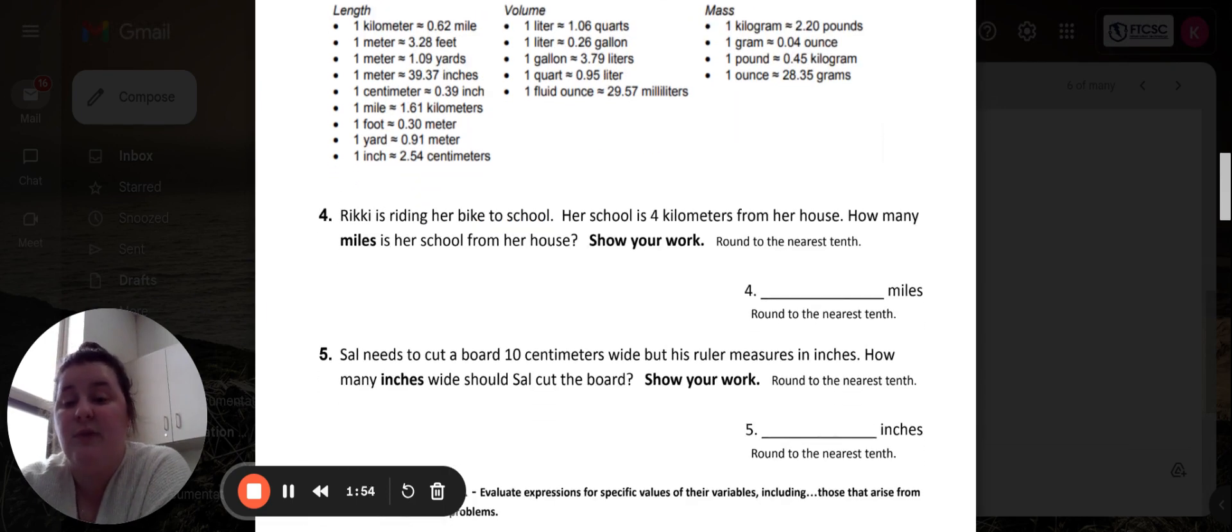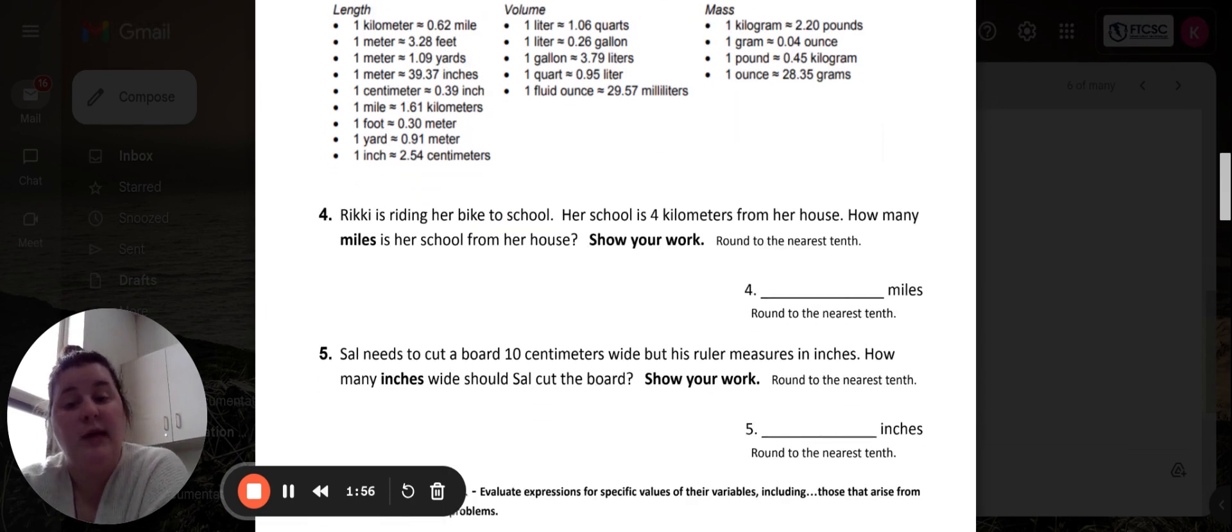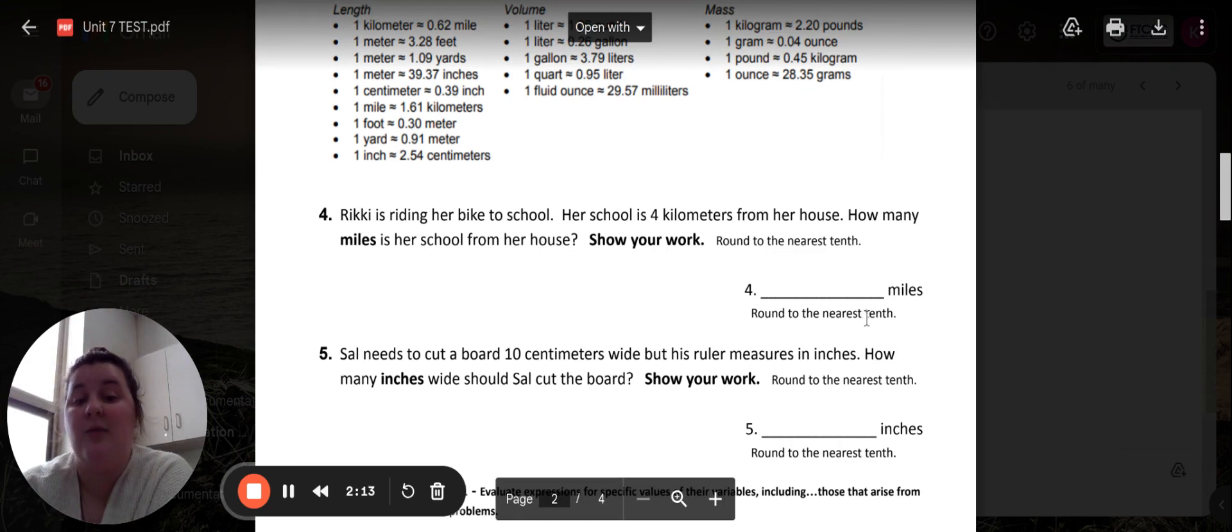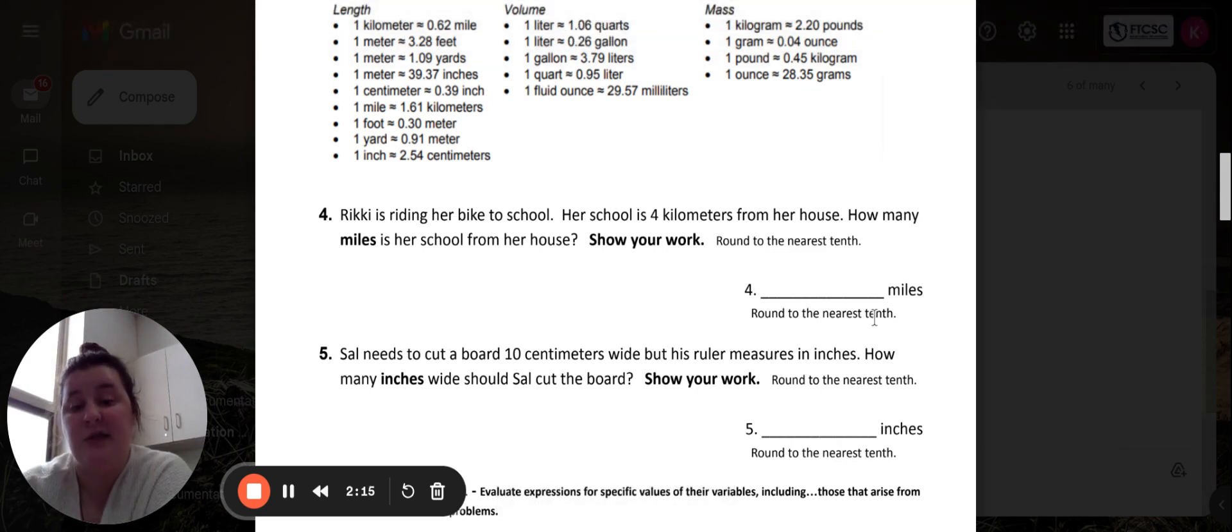So number four says that Ricky is riding her bike to school. Her school is four kilometers from her house. How many miles is her school from her house? You have to show your work on this one and it wants you to round your answer to the nearest tenth. Please pause this video while you complete this problem.